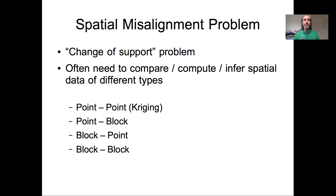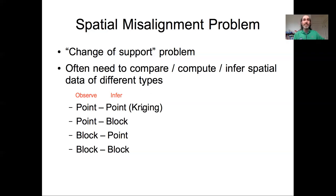So what is the change of support problem, or what is the spatial misalignment problem? It arises when we often need to compare, compute, or infer spatial information at different points or different types than the original data that we have. A simple example would be if we observe data at one set of points and we want to make inferences for a different set of points — that is essentially the definition of our Kriging problem.